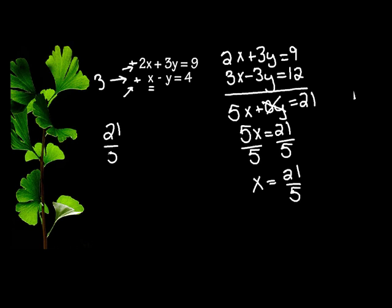So 21 fifths minus y equals 4. Now I want to get this negative y by itself. So I'm going to subtract 21 fifths from both sides of the equation.